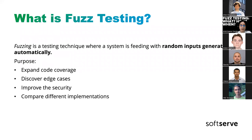Maybe some of you are wondering what is fuzz testing. Fuzz testing is an agnostic technique, so you can use it in any system or in any language. It consists of hitting a system with random inputs generated automatically. The purpose of this is to expand our code coverage. This helps us to discover edge cases, also helps to improve security, and it is useful when we want to refactor something or compare two implementations that do the same — we can compare the output of both methods to verify they work similarly.